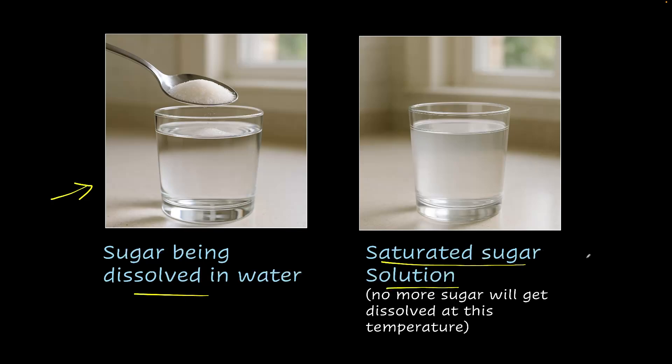So what does this mean? At this point, you cannot add any more sugar at that particular temperature. Let's see the temperature is 25 degrees. At this temperature, you can only dissolve some amount of sugar. And beyond that point, this solution gets saturated.